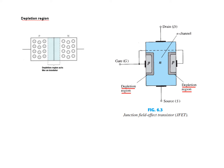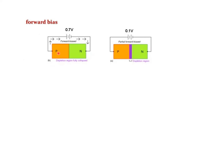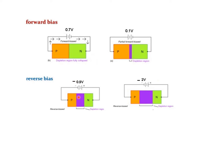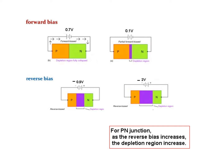We know that when we apply a positive voltage between P and N, this becomes forward bias and current flows. But if we reduce this voltage below 0.7V, the current does not flow — even if it is forward biased at 0.1V, the current does not flow because there is now a depletion region in between. If instead of positive voltage we apply negative voltage, this depletion region becomes wider. When we further increase the negative voltage or reverse voltage, it increases further. We conclude that for a P-N junction, as the reverse bias increases, the depletion region increases.